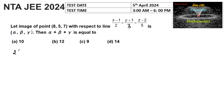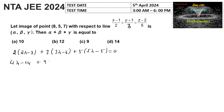Applying the perpendicularity condition: 2(2lambda − 7) + 3(3lambda − 6) + 5(5lambda − 5) = 0. Expanding: 4lambda − 14 + 9lambda − 18 + 25lambda − 25 = 0, which gives 38lambda − 57 = 0.